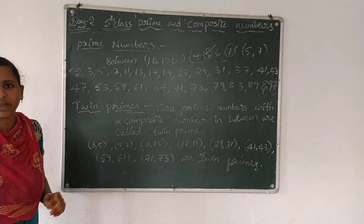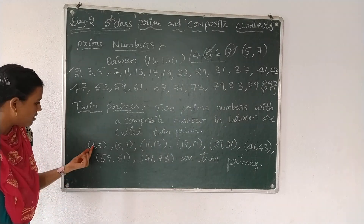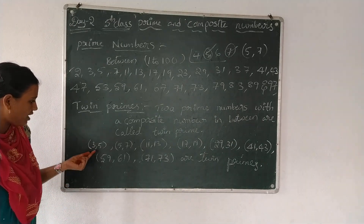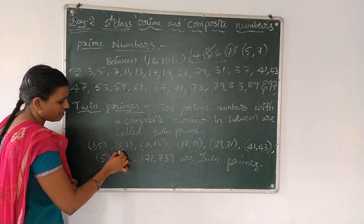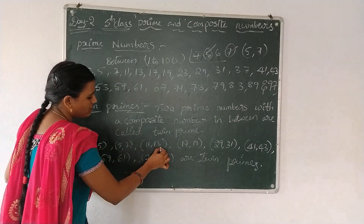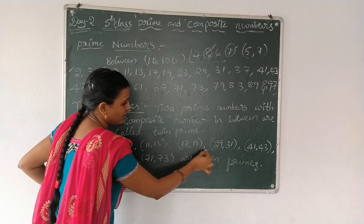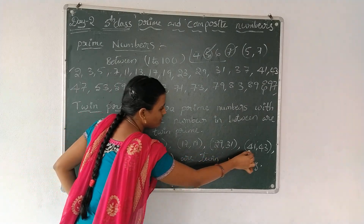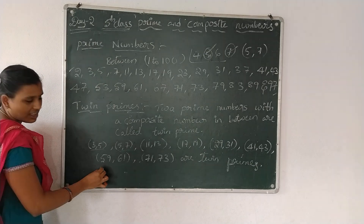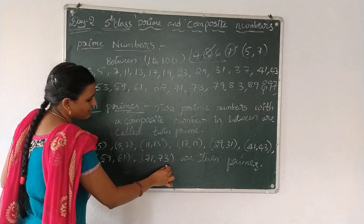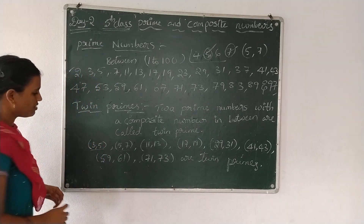Let's see some twin prime numbers up to 100. Those are: 3 and 5, 5 and 7, 11 and 13, 17 and 19, 29 and 31, 41 and 43, 59 and 61, 71 and 73 — these are the twin prime numbers.